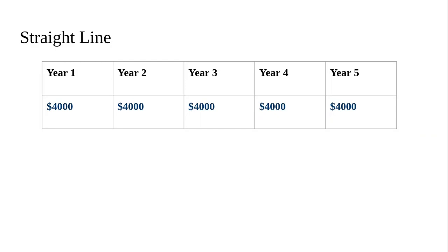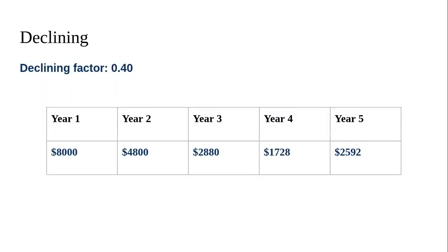The second method is Declining. In this case, the actual amount is multiplied by a declining factor which is the depreciable amount. For example, if the declining factor is 0.40, the first year will be 8,000, and the next year it will decline to 4,800.